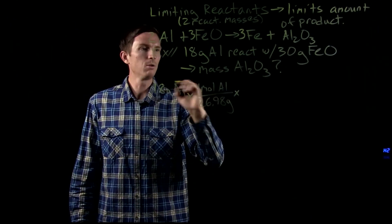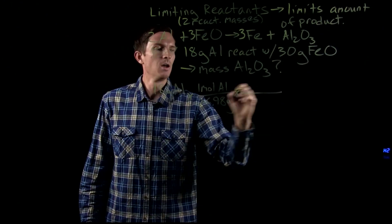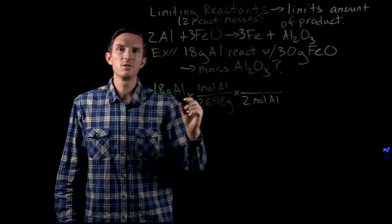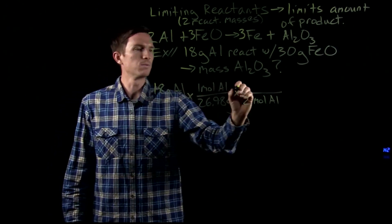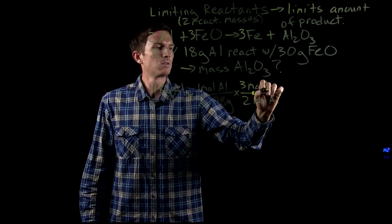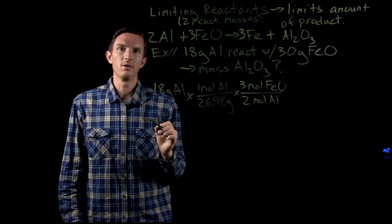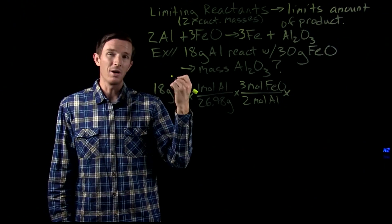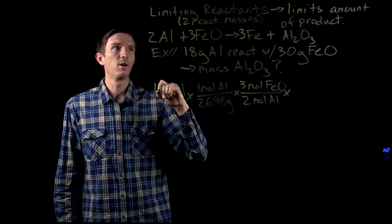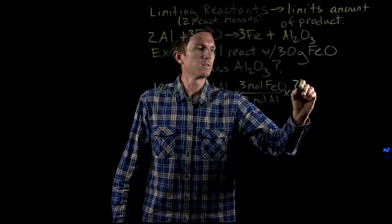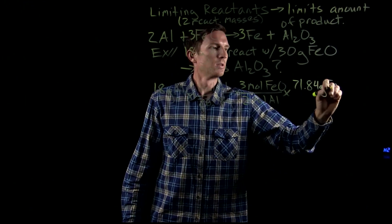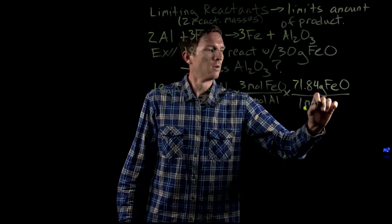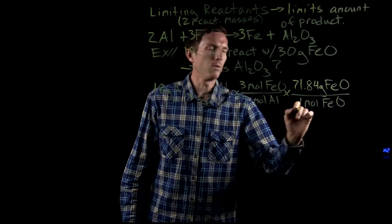And then we want to convert moles of aluminum to moles of our other reactant, iron oxide. So we have the conversion factor based on our balanced equation, 2 moles of aluminum is 3 moles of our iron oxide. And then finally we can end up with our actual molar mass of our iron oxide, and that's 71.84 grams of iron oxide per one mole.